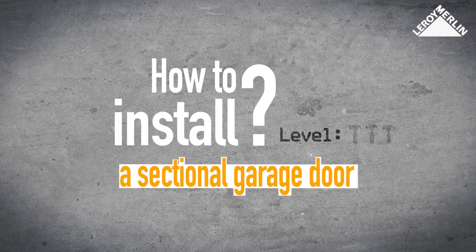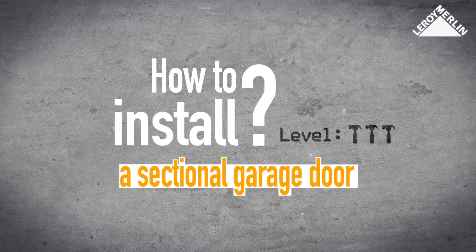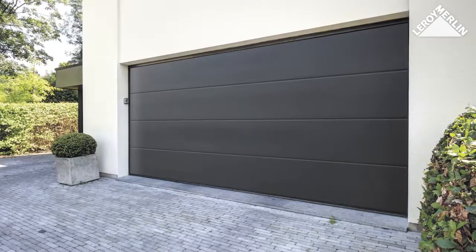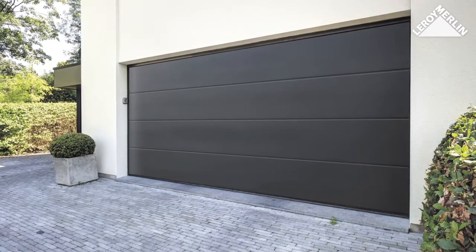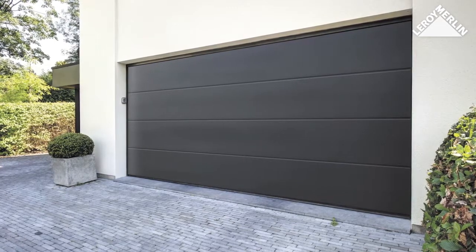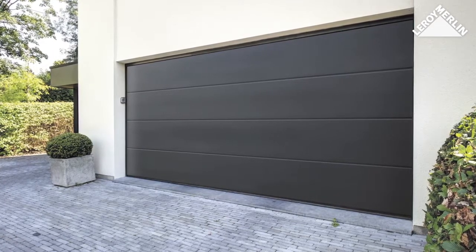How to install a sectional garage door, difficulty level three hammers. This type of door takes up less space under the ceiling when it is opened and is usually power assisted. This is a good way of saving space and improving thermal insulation.